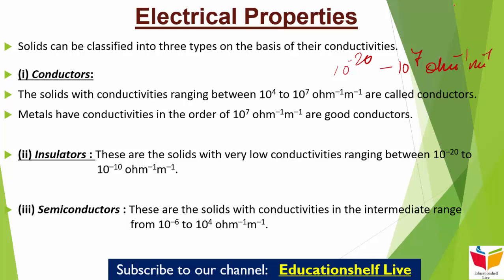Now, solids को हम 3 types में classify कर सकते हैं, depending upon उनकी conductivities। पहला type है conductors — the solids with conductivity ranging between 10^4 to 10^7 per ohm per meter are called conductors। जो metals होते हैं उनकी conductivities 10^7 वाली range में आती हैं और ये काफी अच्छे conductors होते हैं।